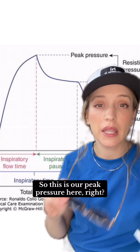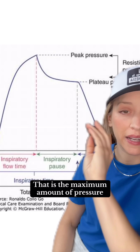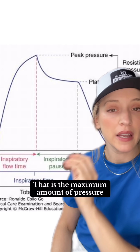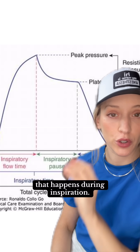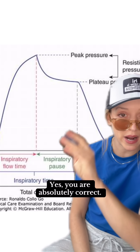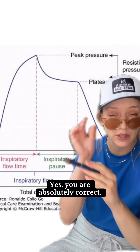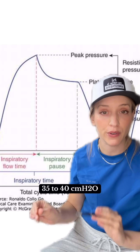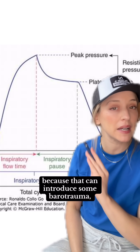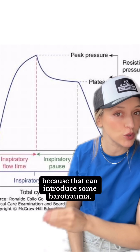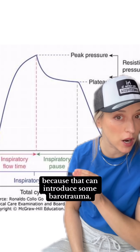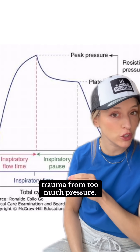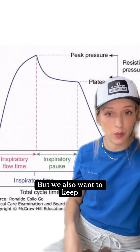So this is our peak pressure here — that is the maximum amount of pressure that happens during inspiration. You are absolutely correct. We want to keep it below 35 to 40 centimeters of water because that can introduce some barotrauma — trauma from too much pressure — and that can hurt our little baby alveoli.